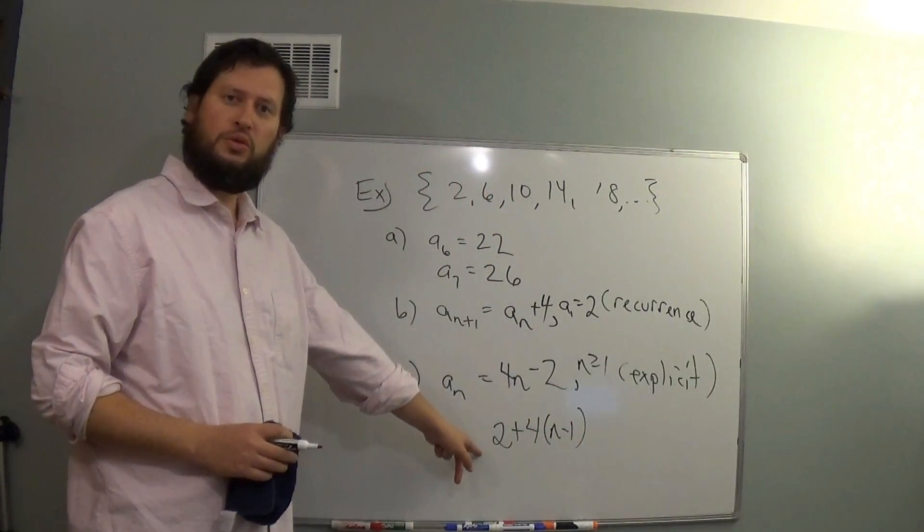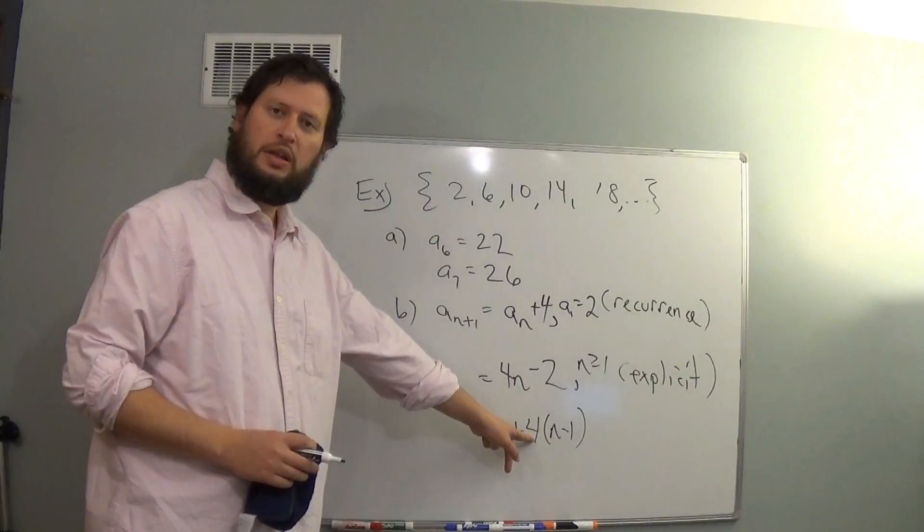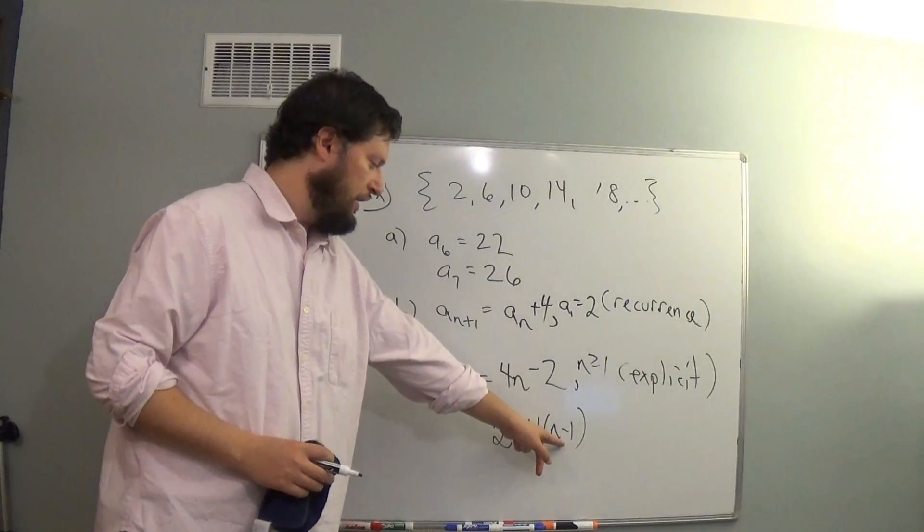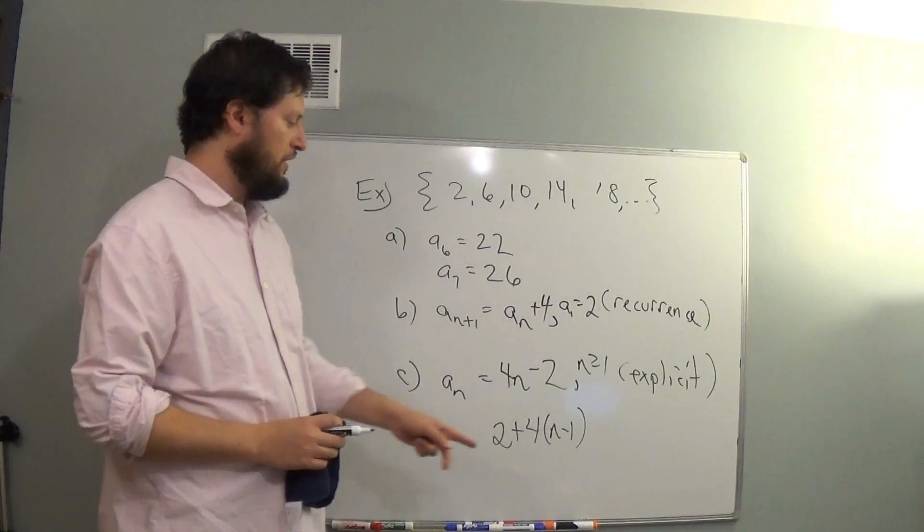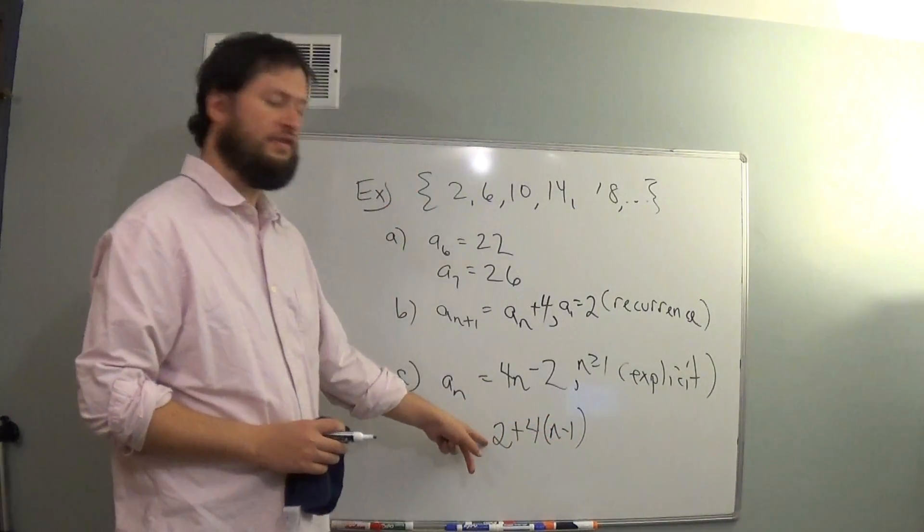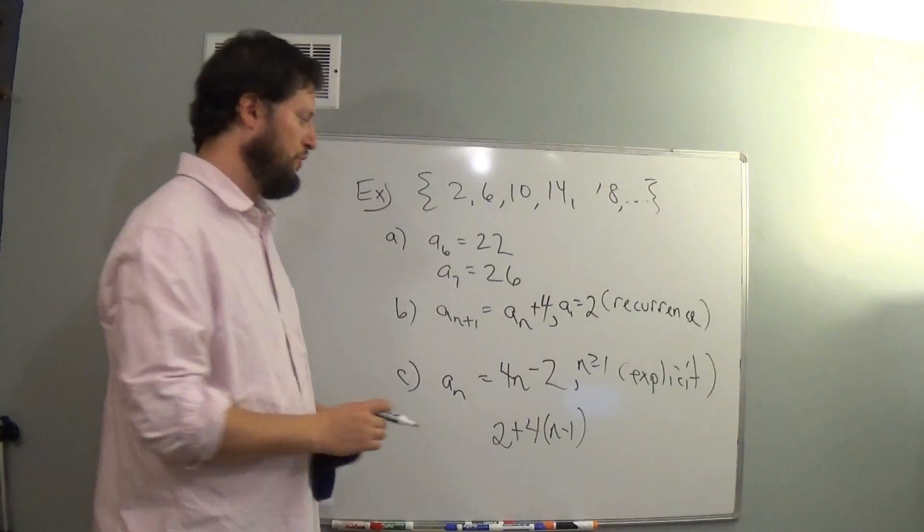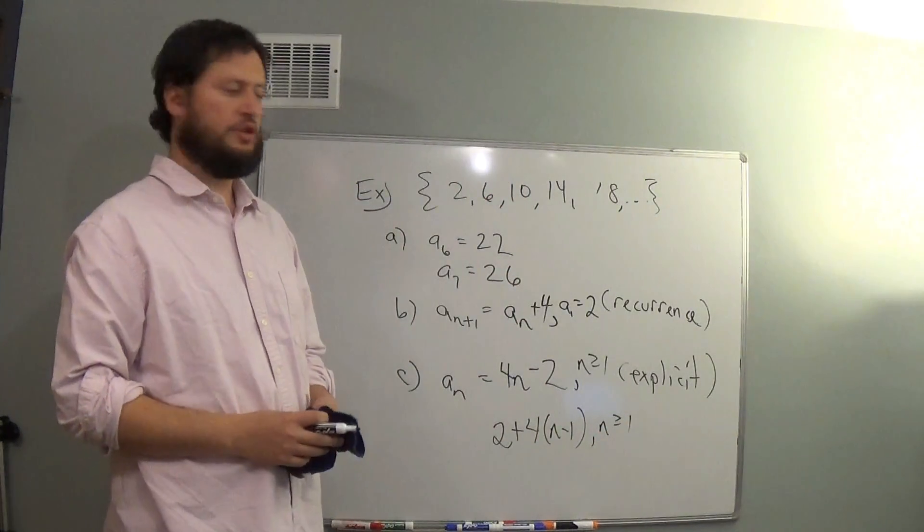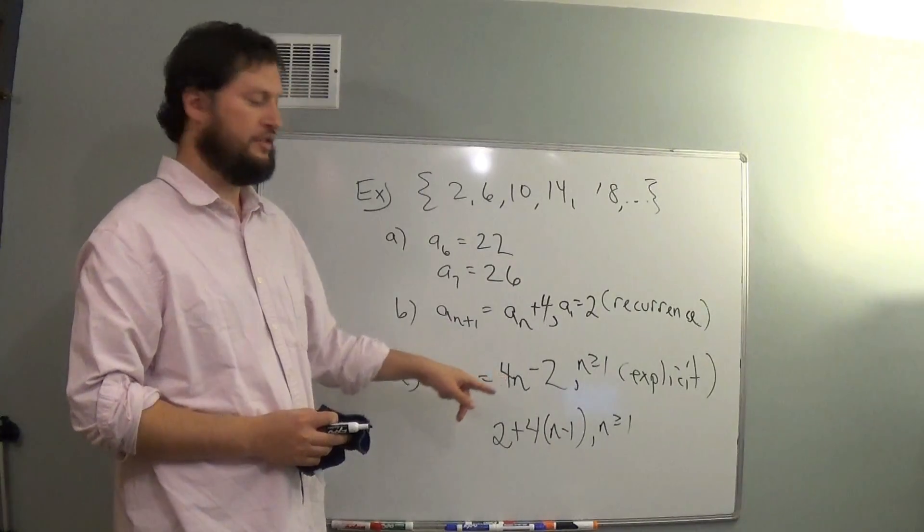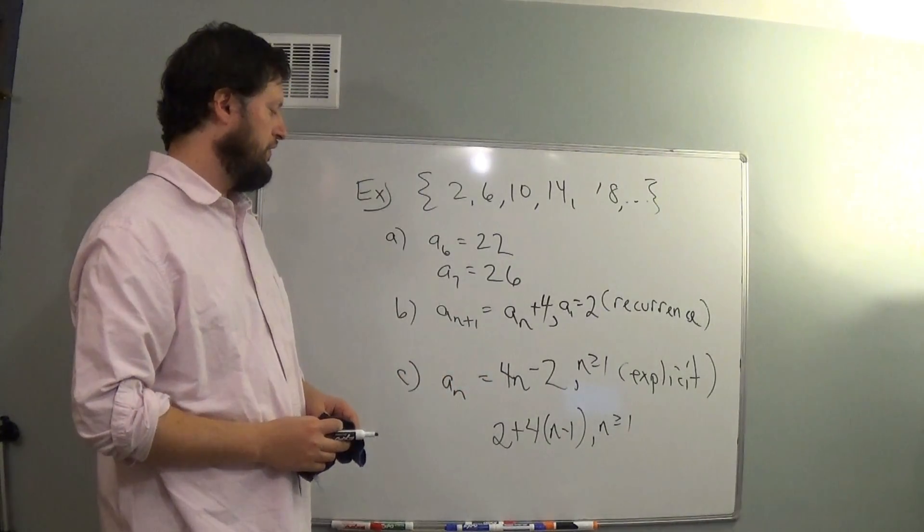So I start at 2, look at multiples of 4, but let's use (n-1). When I plug 1 in for n, I don't want any multiples of 4, I want that to be 0. So plugging 1 in for n will make that go away, leaving me with just 2. So that's a different way to write it. There are even other ways you could write it. There's not just a single correct answer for Part C.